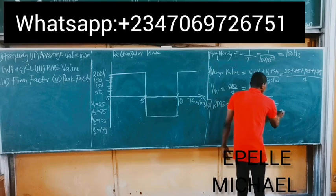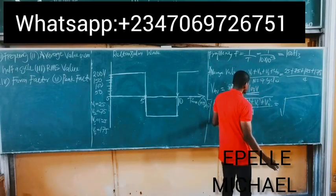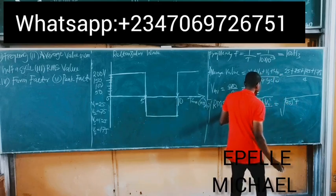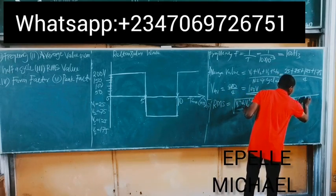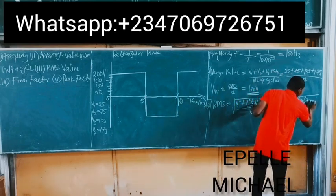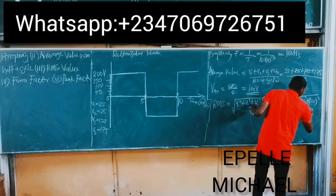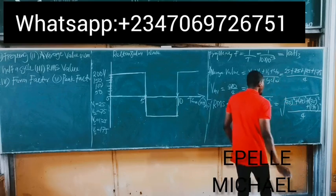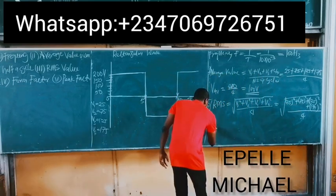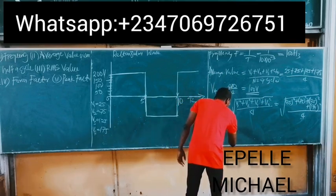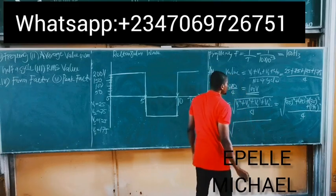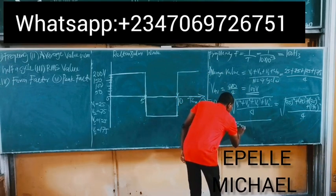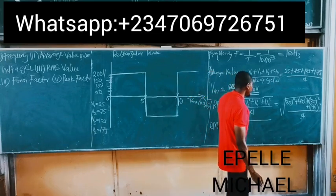So this is equal to the square root of V1 gives us 25, 25 squared, plus V2 gives us 75, 75 squared, plus V3 gives us 125, 125 squared, plus V4 gives us 175, 175 all squared, divided by 4.